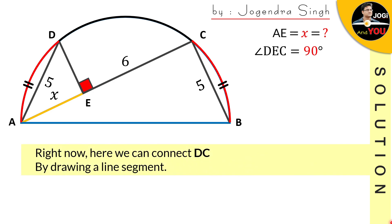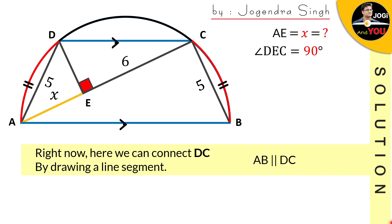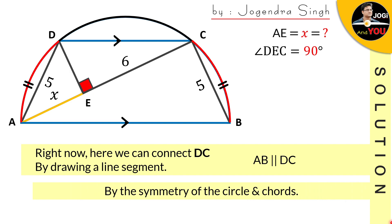Now here we can also connect DC by drawing a line segment. By observing this figure, we have AB parallel to DC by the symmetry of the circle and chords.